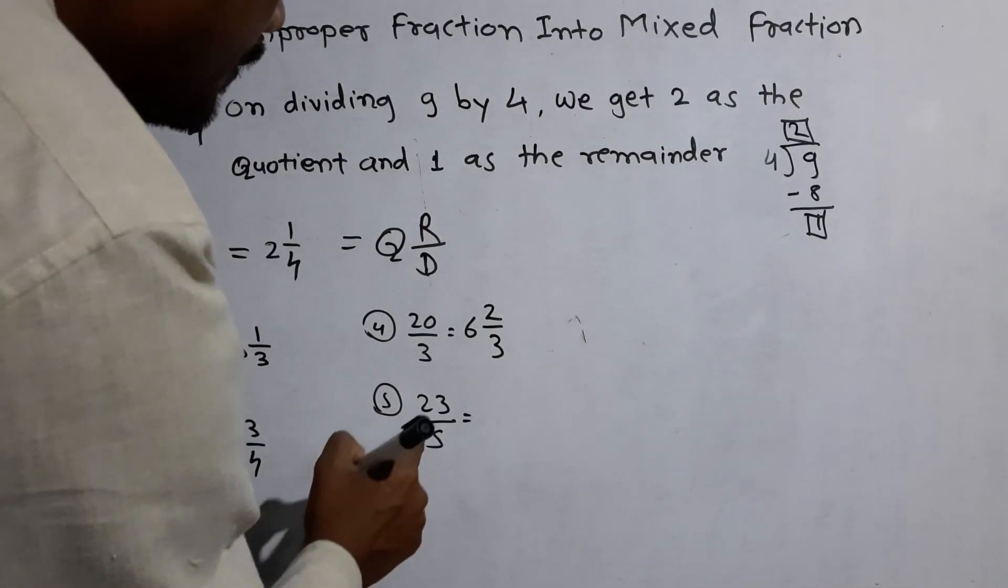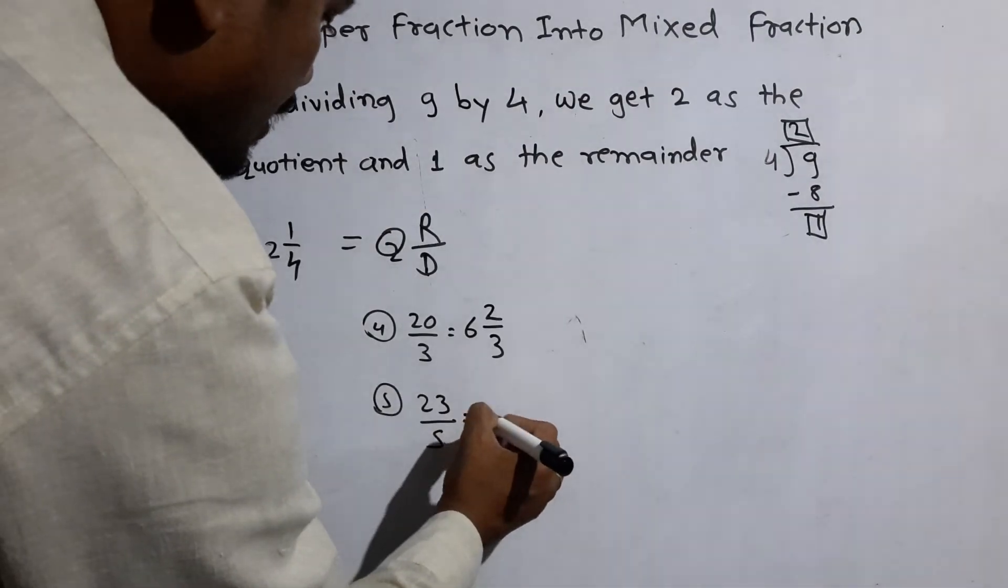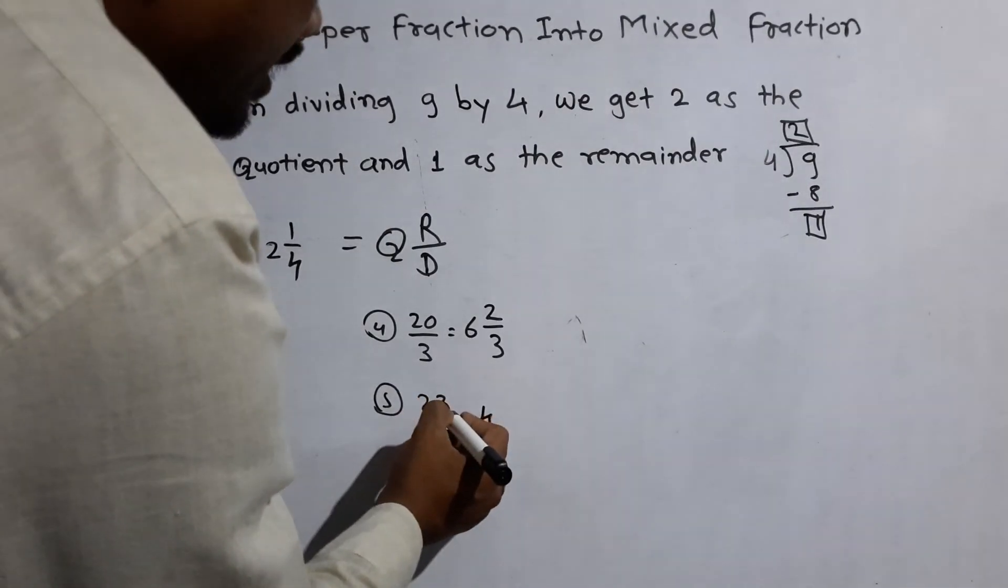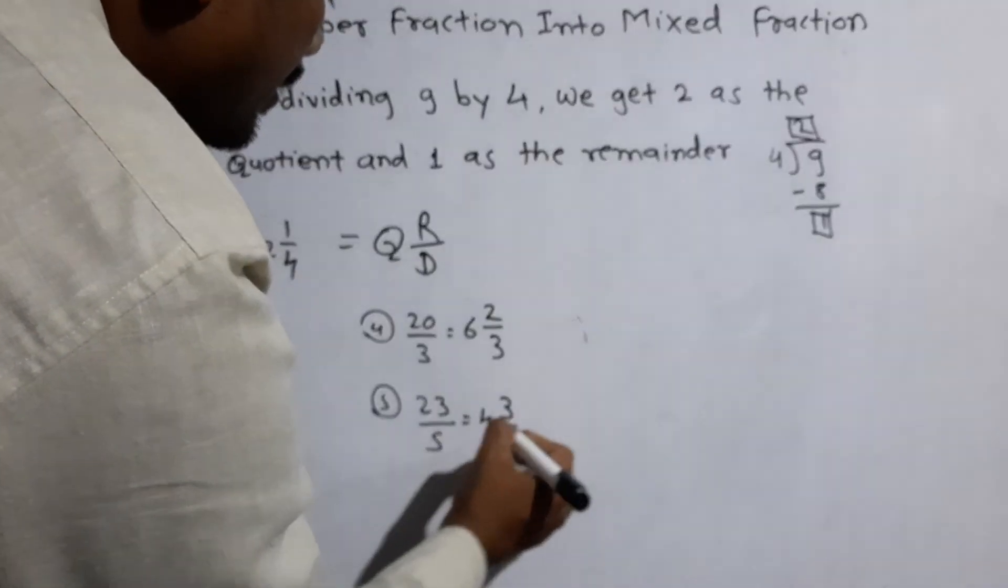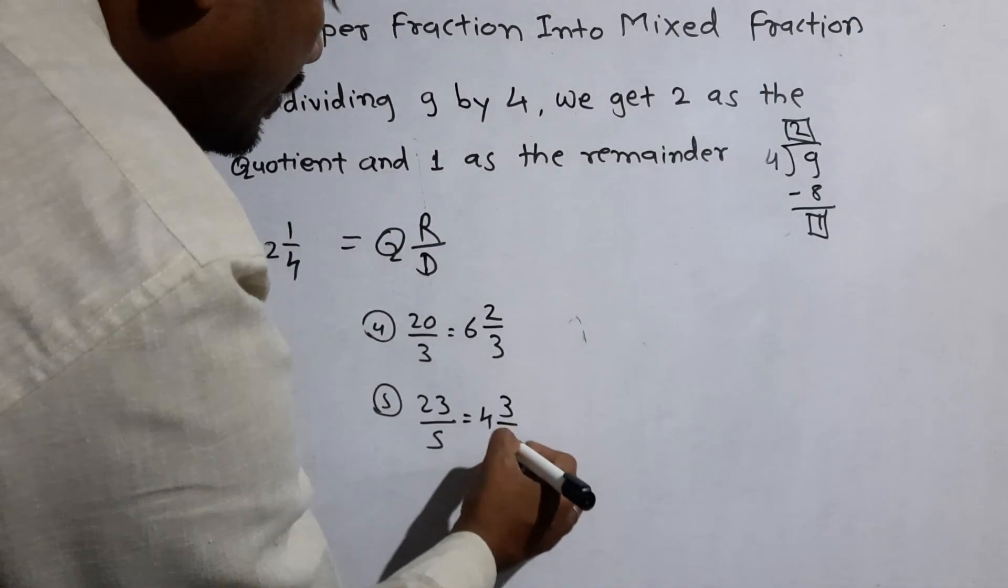23 by 5. 5 fours are 20. Remainder 3. Denominator 5.